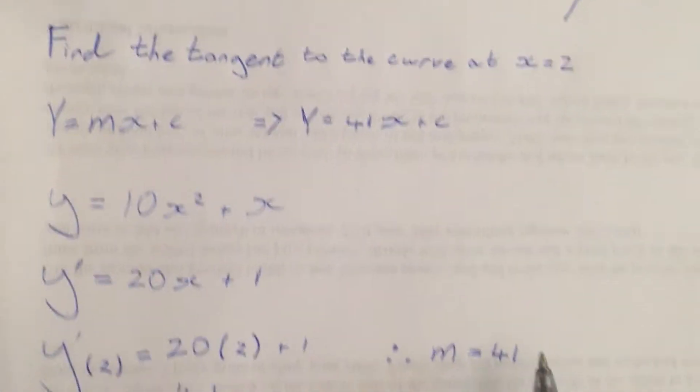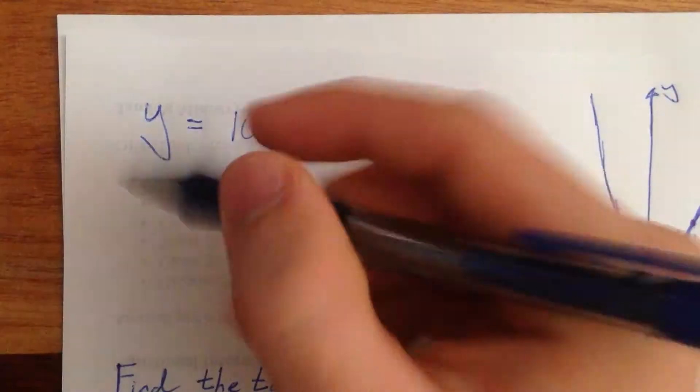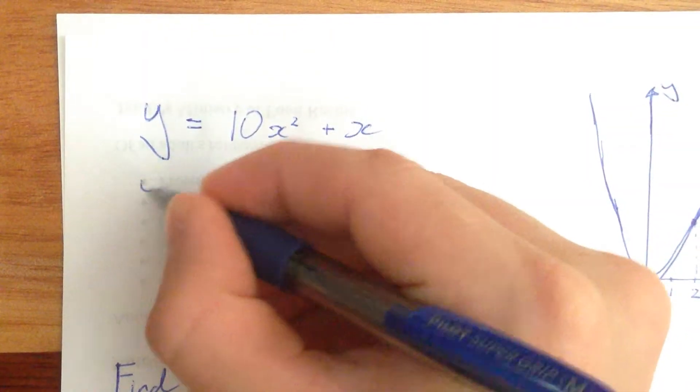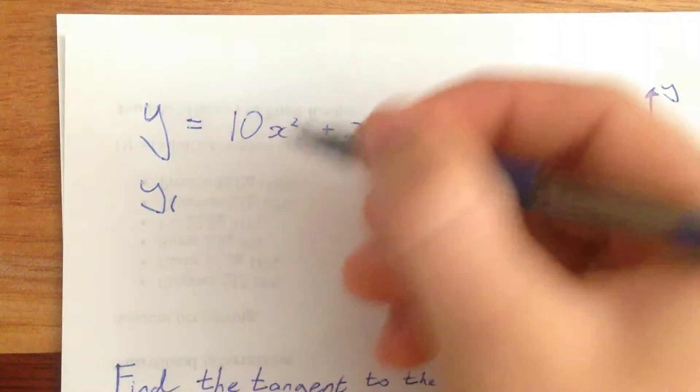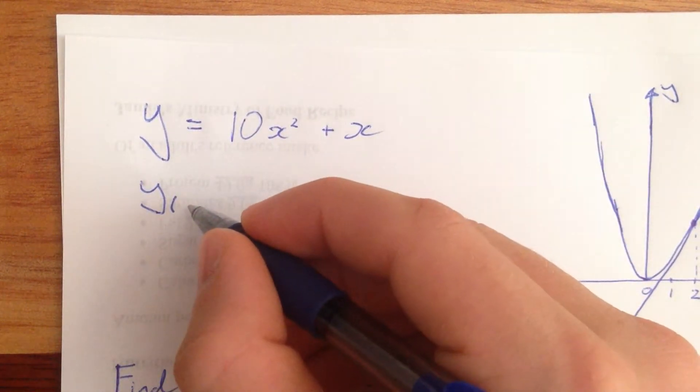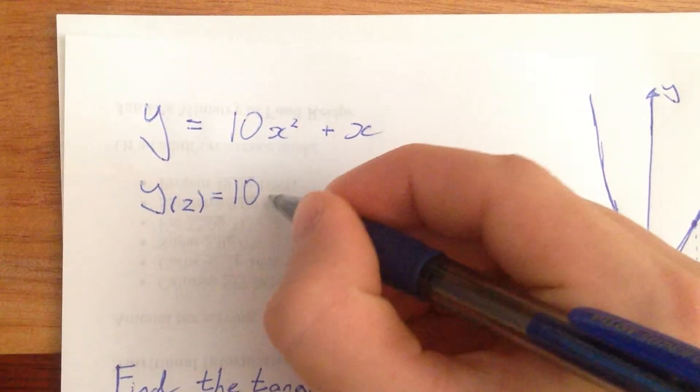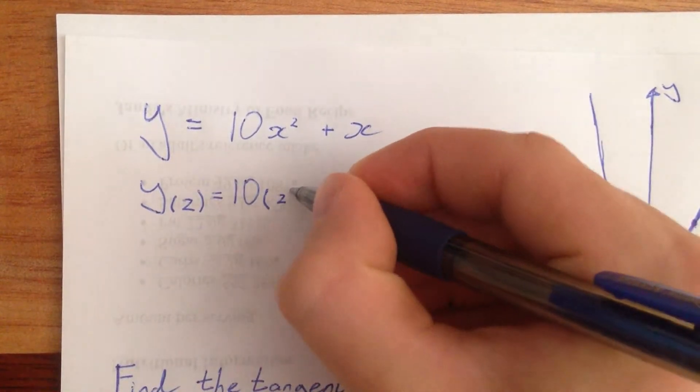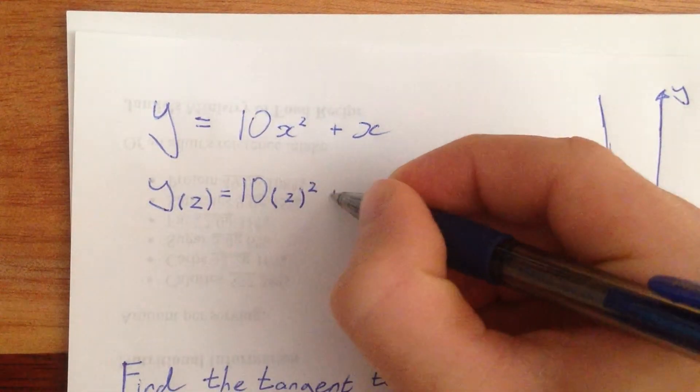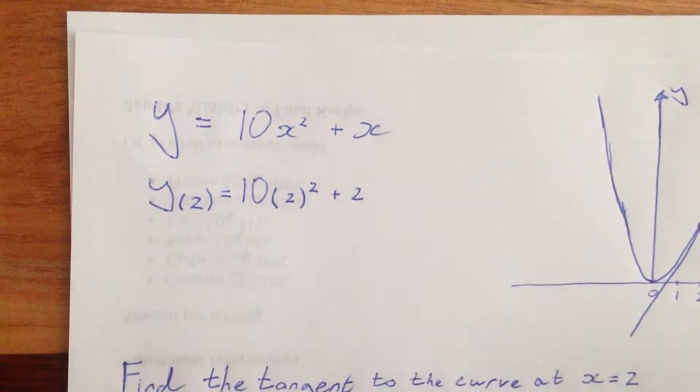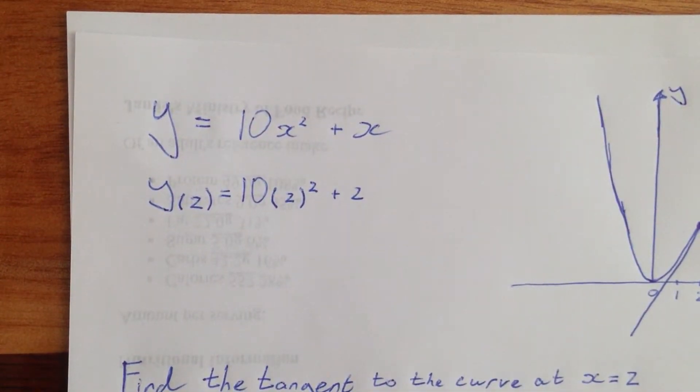Alright, so let's go ahead and find out what value that takes on. I'll do it here next to this one. So the value of the function at x equals 2 is 10 times 2 squared plus 2. I think that should be 42.